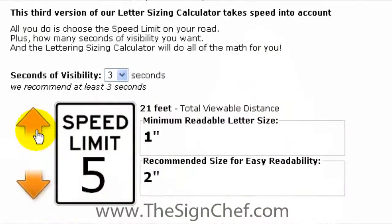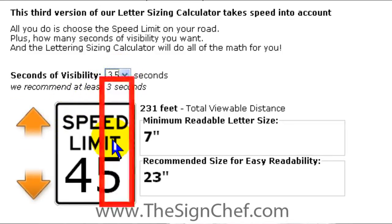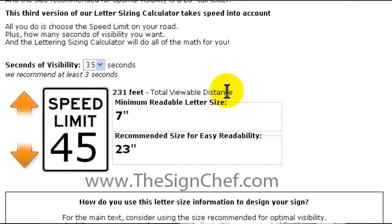Now here's the really cool sizing calculator for signs going out by the road. This calculator takes speed into account. Let's suppose the speed limit on your street is 45 miles per hour and you want your message to be readable by passing motorists for at least three and a half seconds. Then you'll instantly see that you need at least seven-inch tall letters, or for easy readability, 23-inch tall letters. This 231-foot total viewable distance is a reference point calculated from the rate of speed and the number of seconds you select.